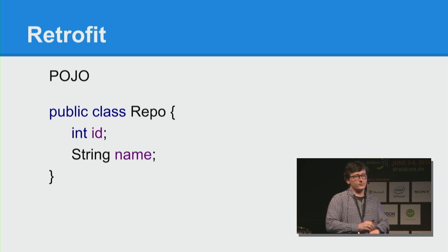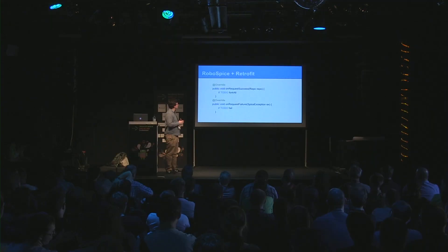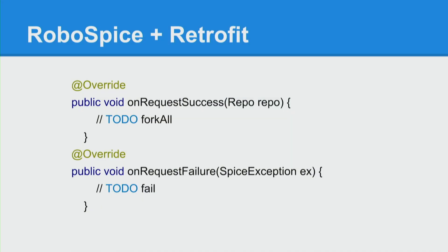It's tricky to use with APIs that can change. When you connect RoboSpice and Retrofit together, you get the tandem — RoboSpice is the main thing and Retrofit is a module for it. You extend a few classes, set up some stuff, and when you use Retrofit with RoboSpice you get two callbacks: success and failure. On success, you get your defined object and do whatever you need with it. On failure — no internet, 404, whatever happens — you have a SpiceException you can use.